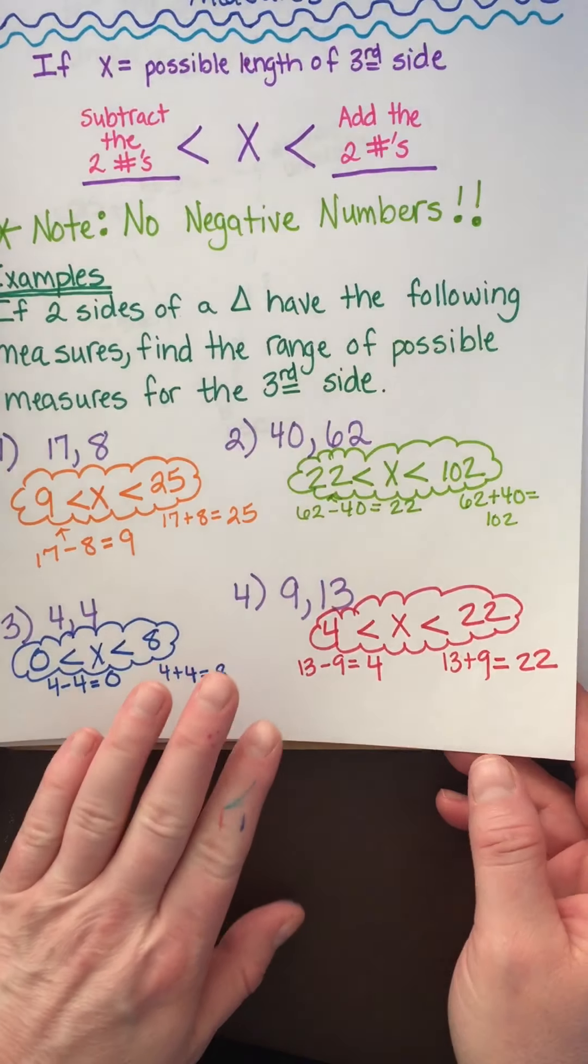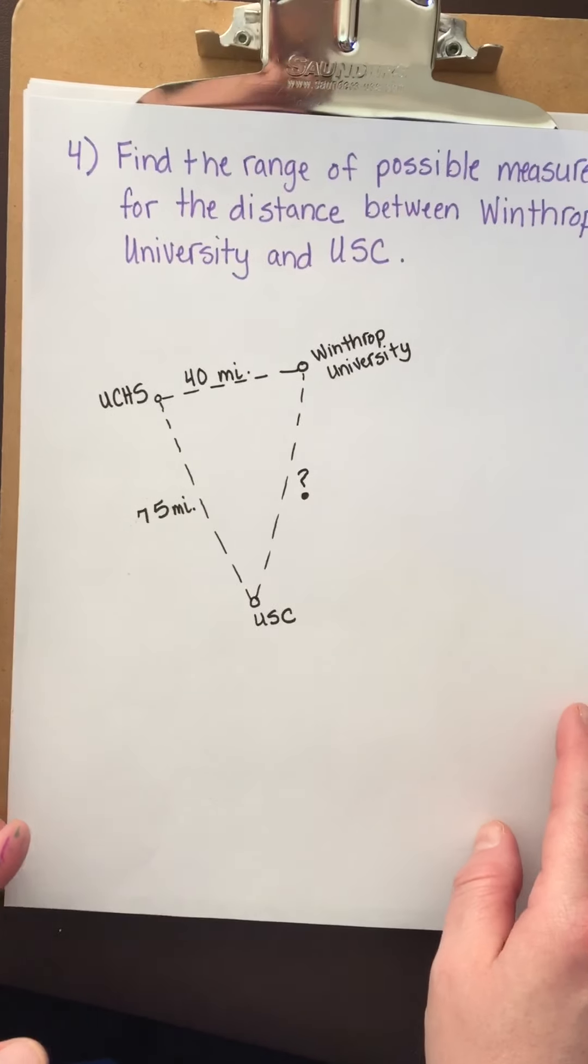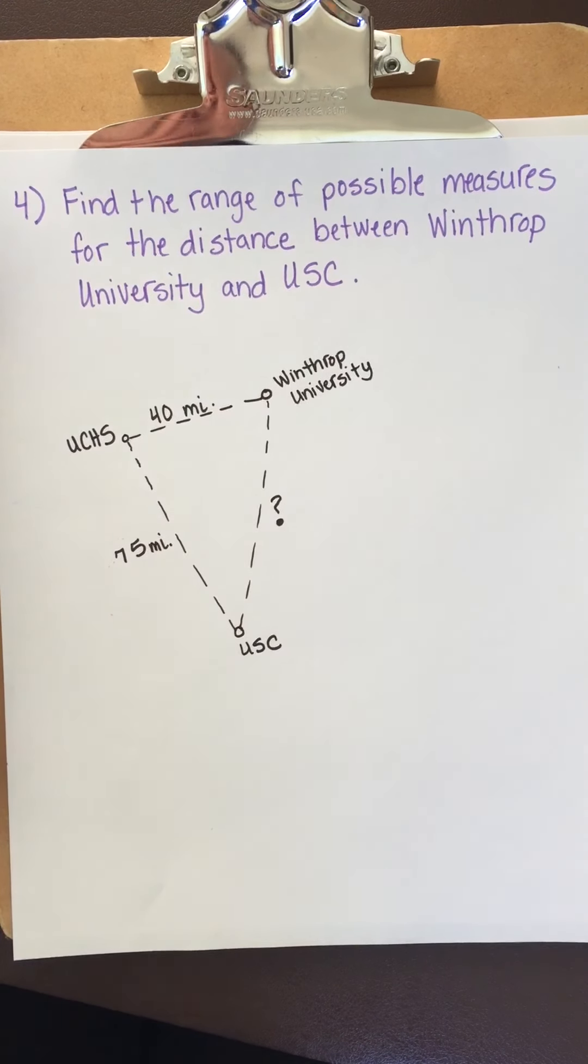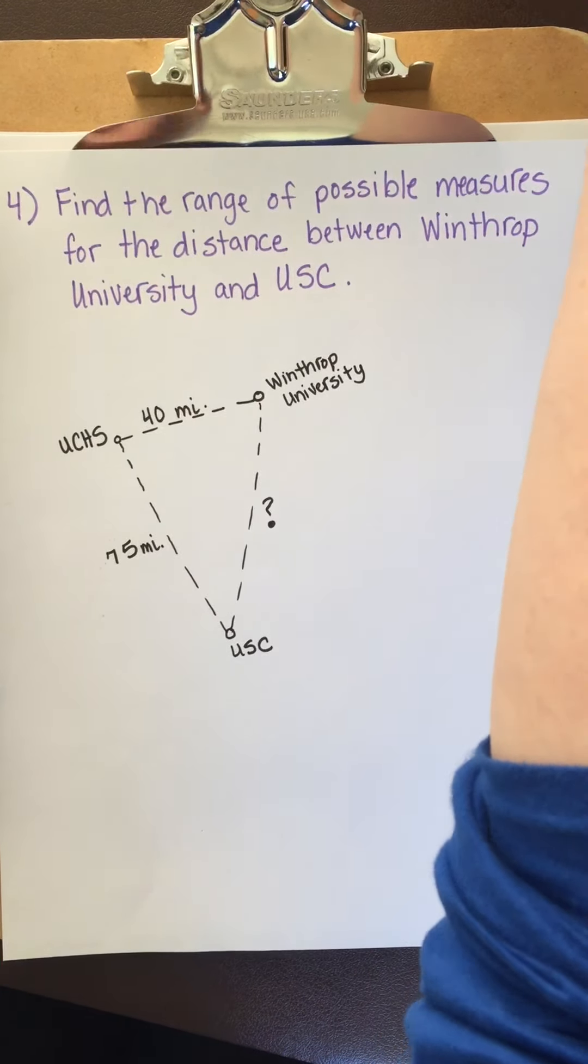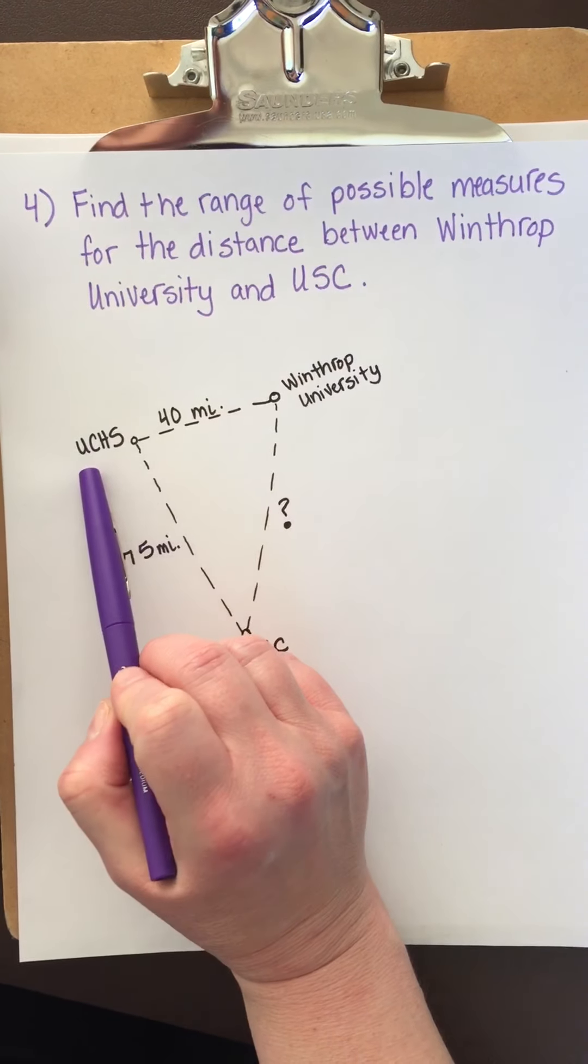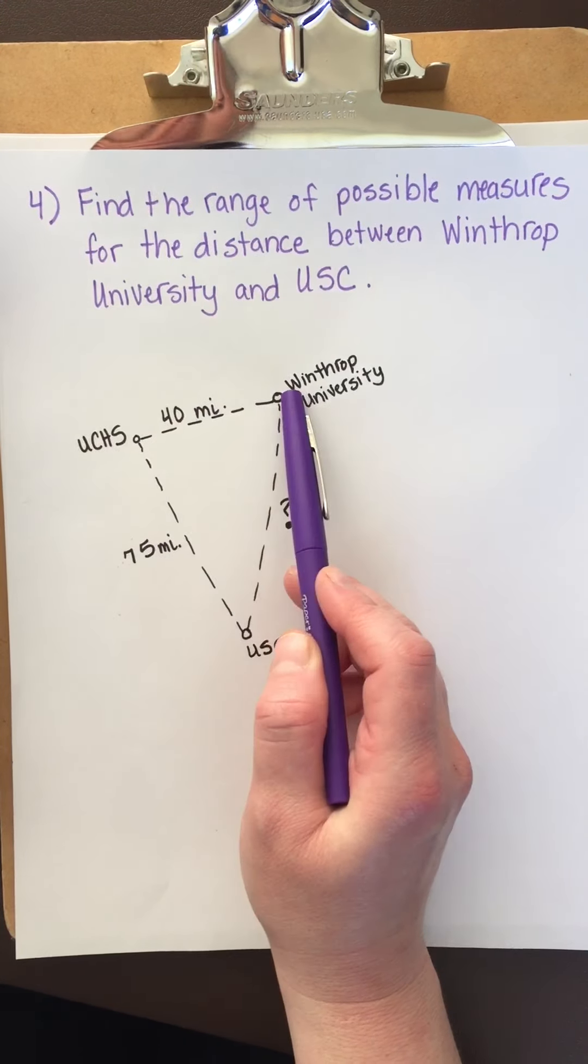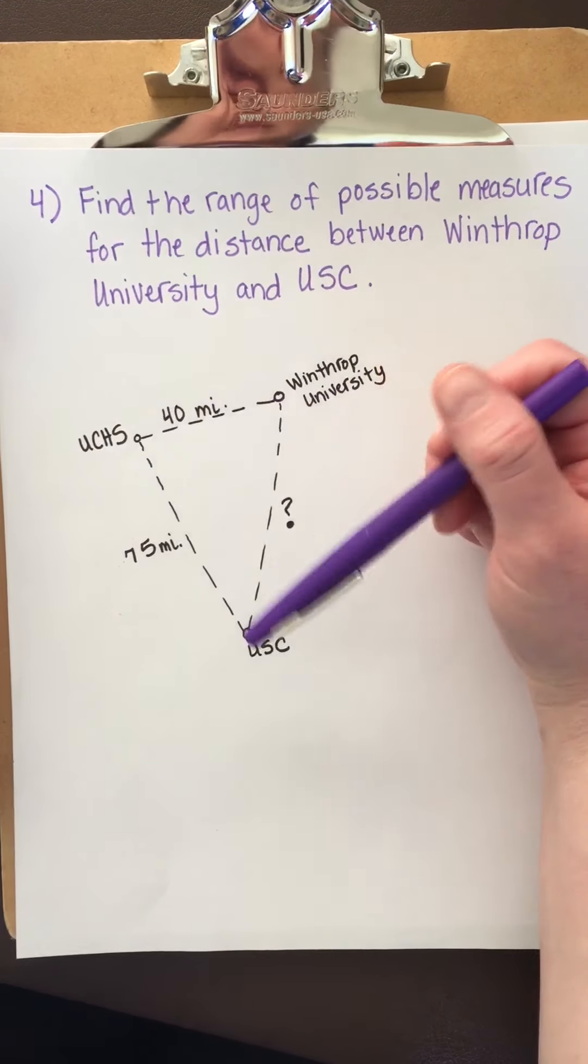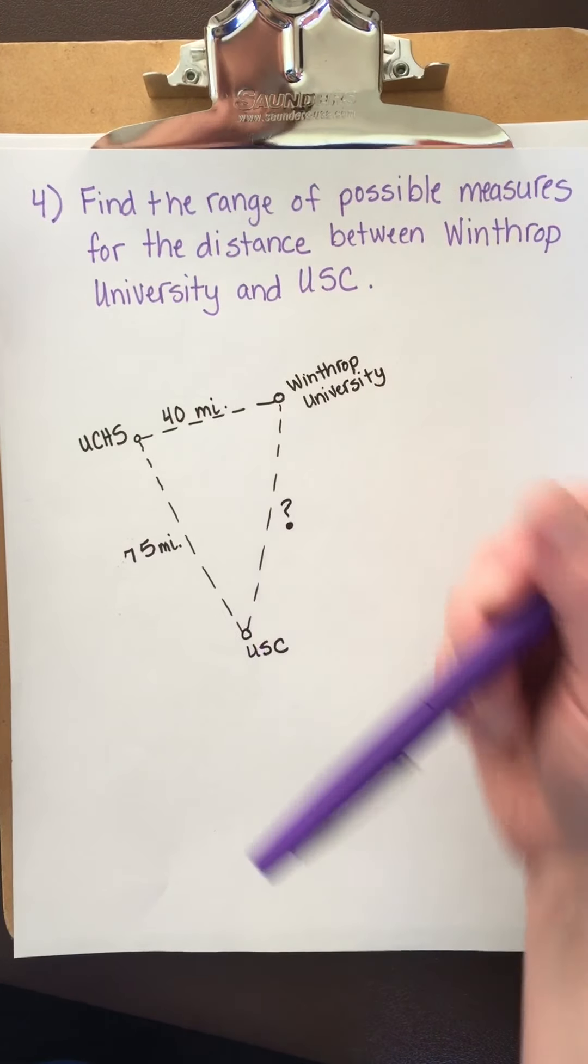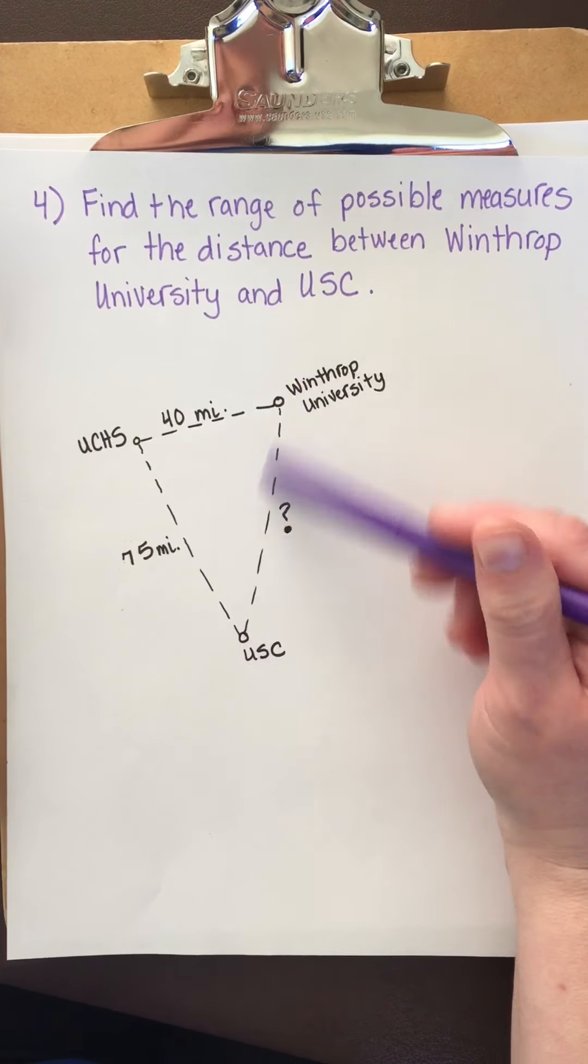All right, let's look at this word problem here. This is easy, right? Wonderful. So since you guys will be going to college one day, it says, find the range of possible measures for the distance between Winthrop University and USC. All right. So here I have Union County High School, which we know is in Union, South Carolina, and it is 40 miles away from Winthrop University. I'd like to let you know I approximated those distances. And then we have the University of South Carolina, which is in Columbia, and that's about 75 miles. So we're going to say 75.